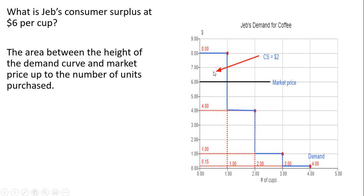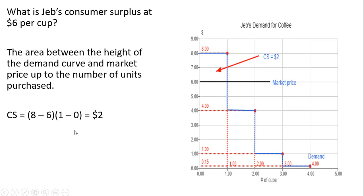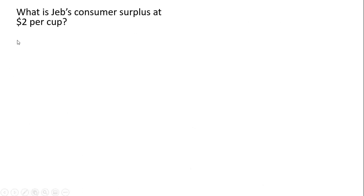We can represent this area as width times length — the area of a rectangle. Width times length: 8 minus 6 is 2, multiplied by 1 minus 0. That calculation gives us $2.00 in consumer surplus.